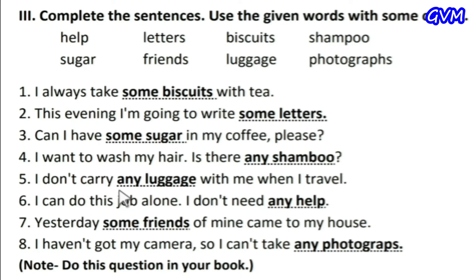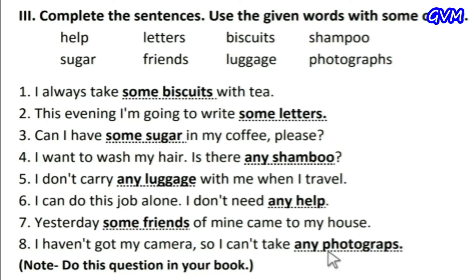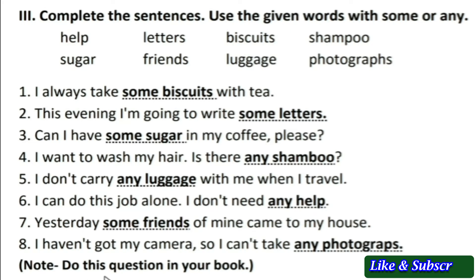Fourth: 'I want to wash my hair, is there ___?' — the correct answer is 'any shampoo'. Fifth: 'I don't carry ___ with me when I travel' — the answer is 'any luggage'. Sixth: 'I can do this job alone, I don't need any help'. Seventh: 'yesterday ___ of mine came to my house' — the correct answer is 'some friends'. Eighth: 'I haven't got any camera so I can't take any photographs.' Do these questions in your book.